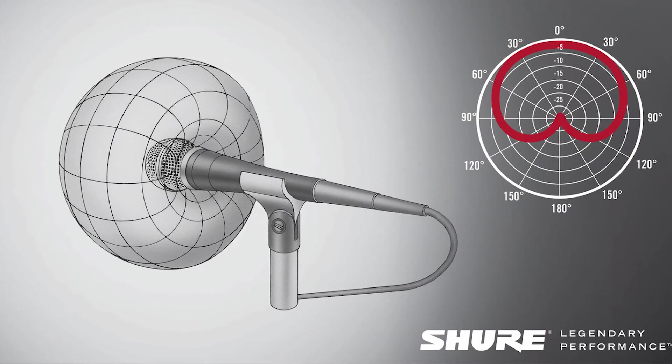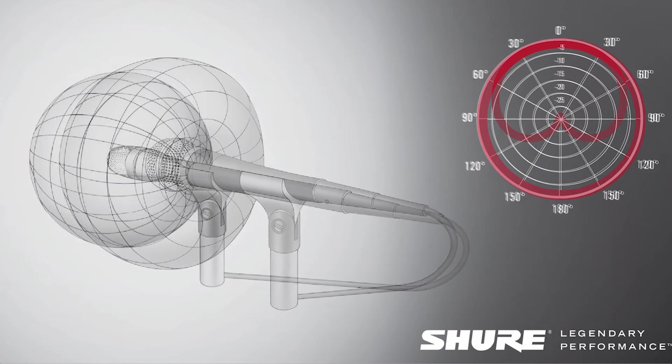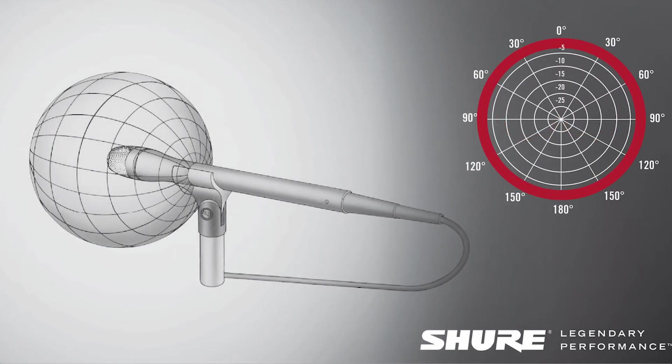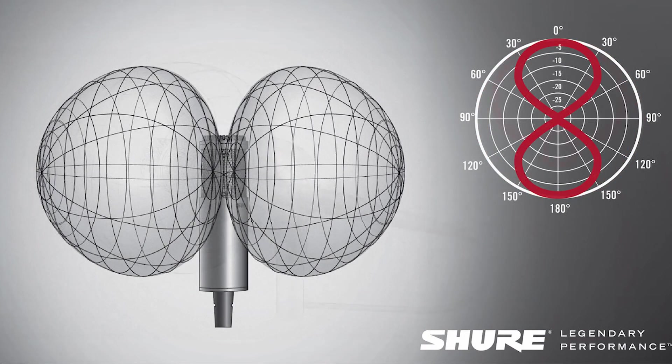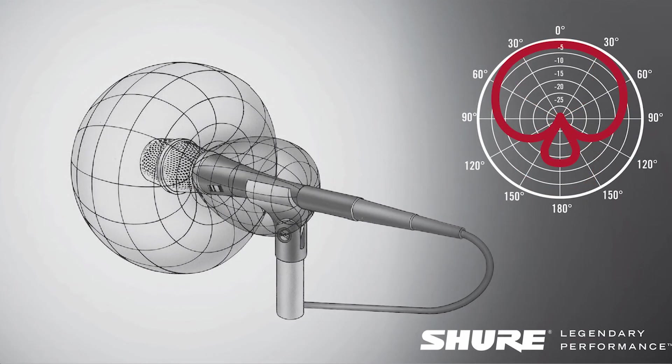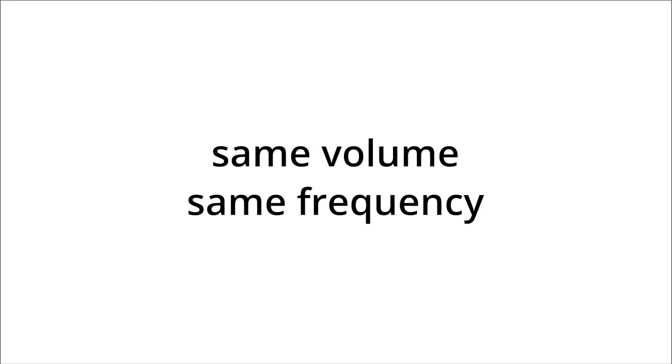If we have a look at some 3-dimensional models of these pickup patterns, we can see that they exist as bubbles around the microphone. These are the 3D models of a cardioid pickup, an omnidirectional pickup, a bidirectional pickup, and a supercardioid pickup. It is important to note that these imaginary bubbles illustrate which exact points in space the microphone perceives as being at the same volume and at the same frequency.